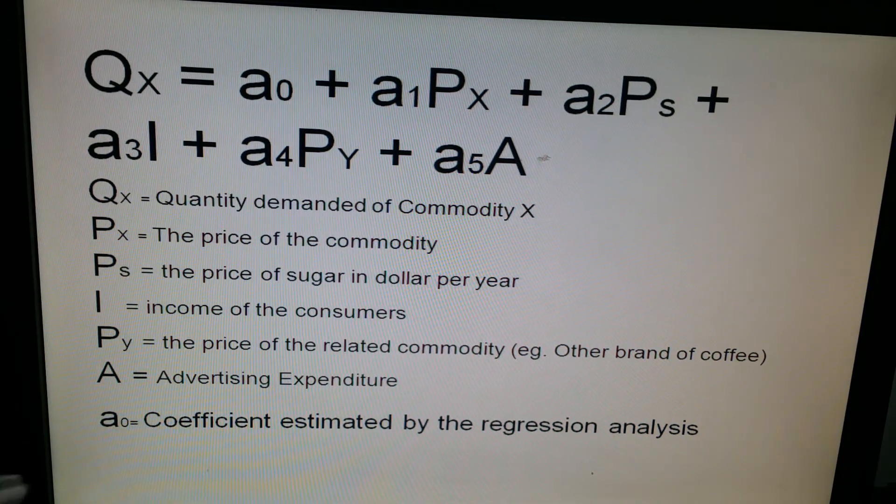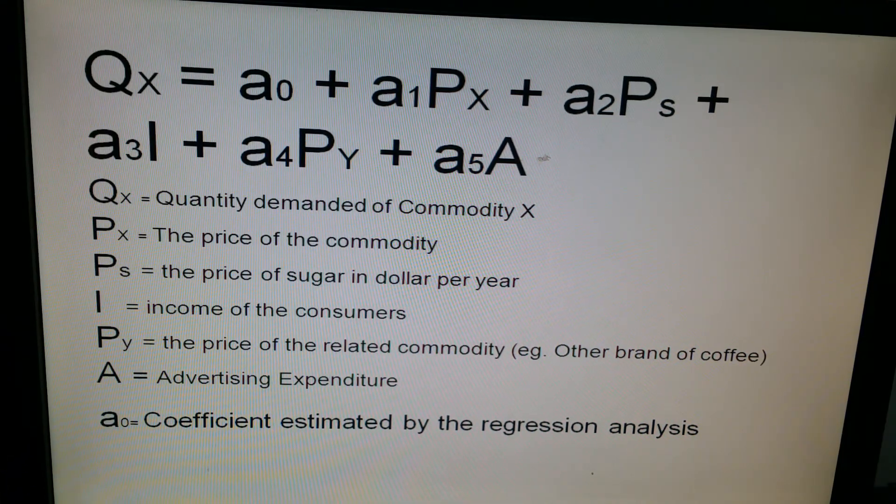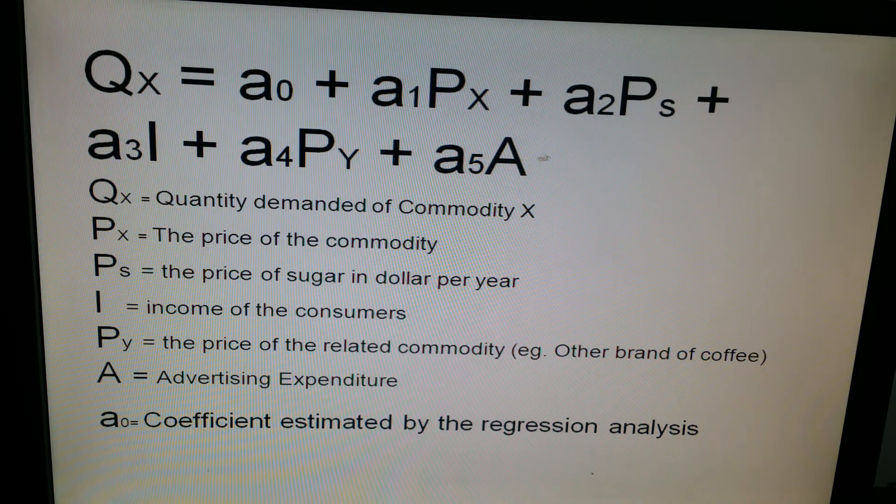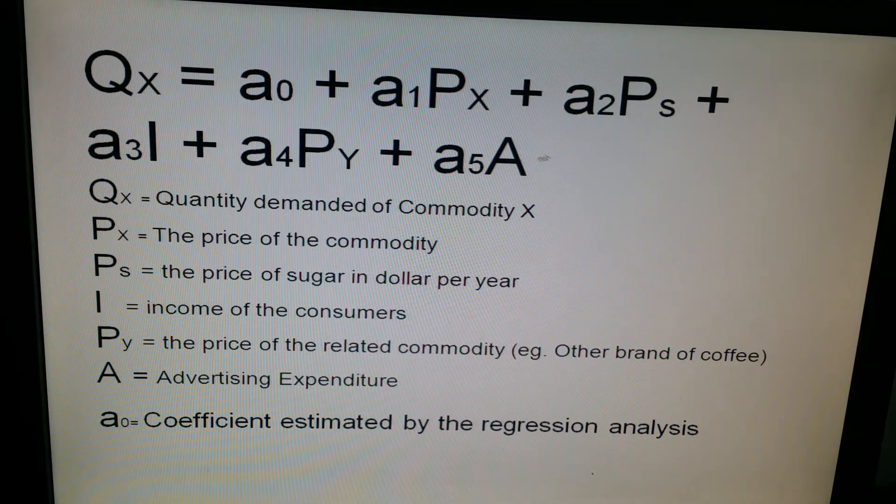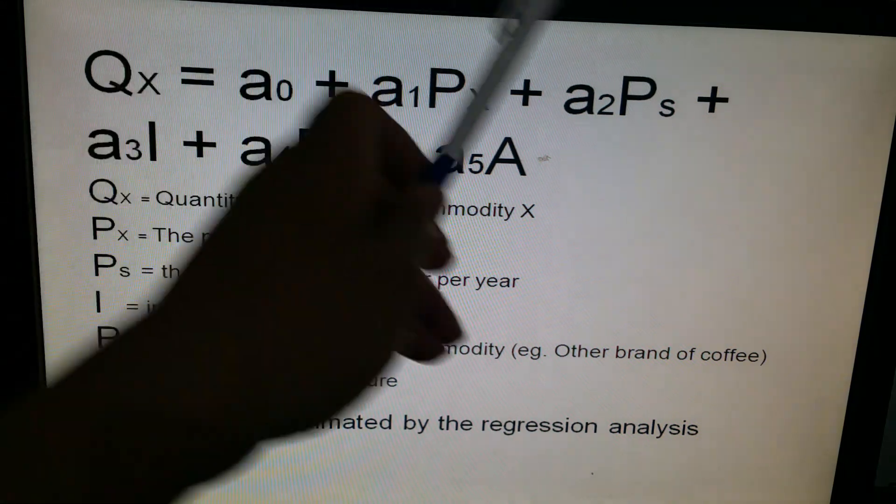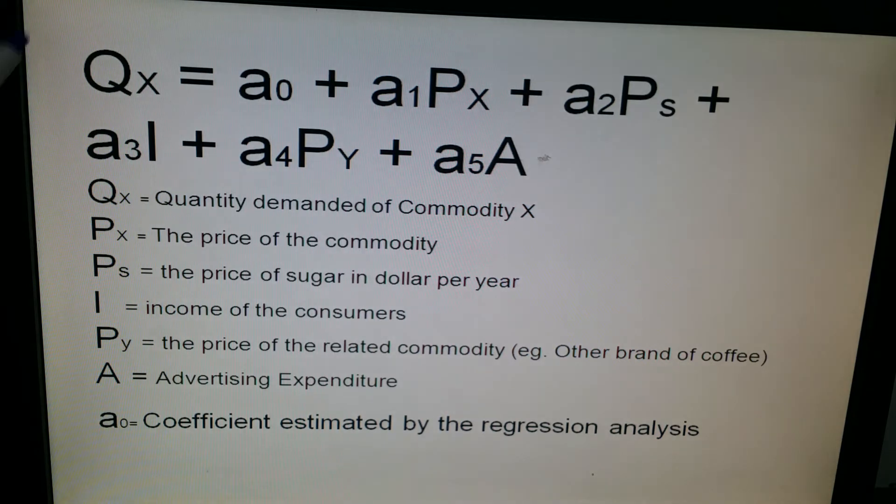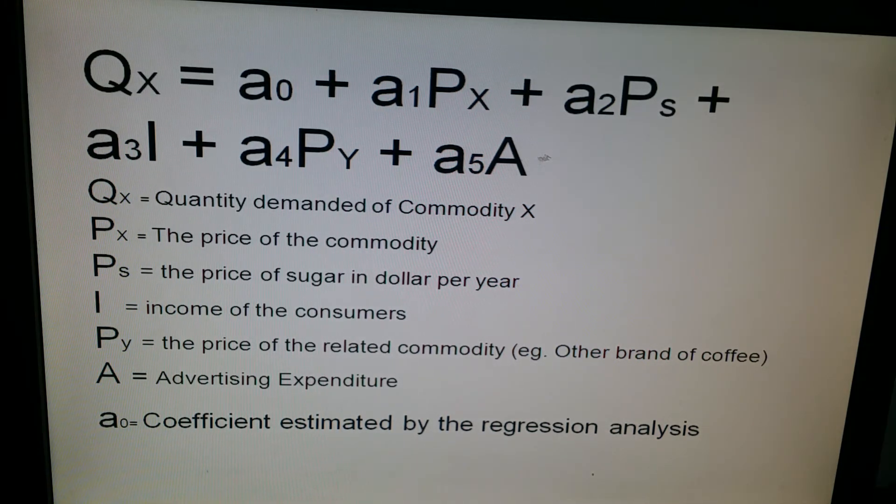And of course, this is the coefficient which has been calculated through a regression analysis. What it very simply means is that if all these factors are zero, if all these factors are zero, still the quantity of X which is demanded will be equal to a certain quantity, and that quantity will be determined by this particular coefficient, alright?